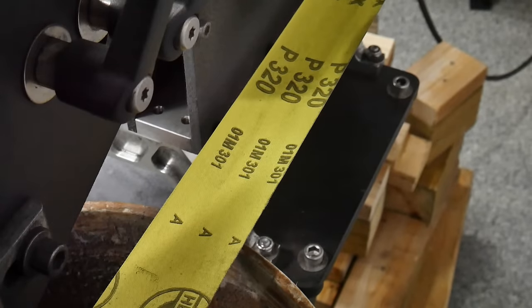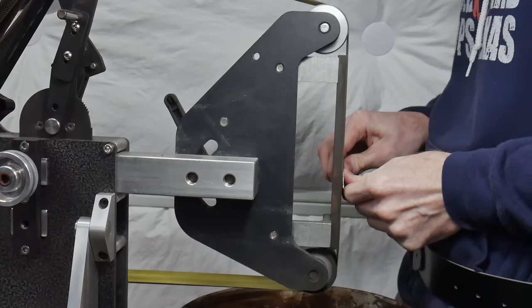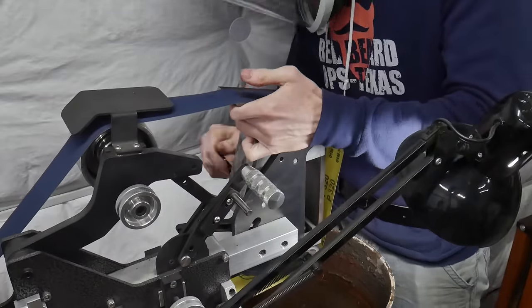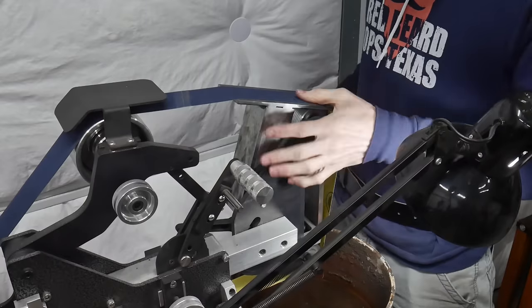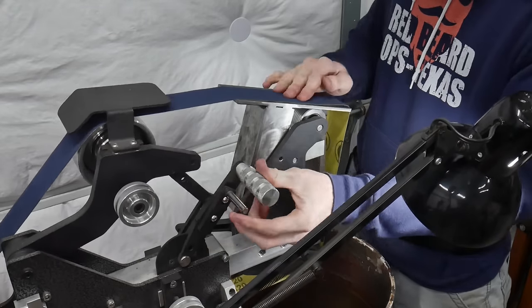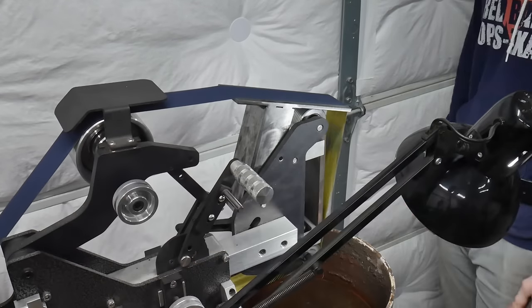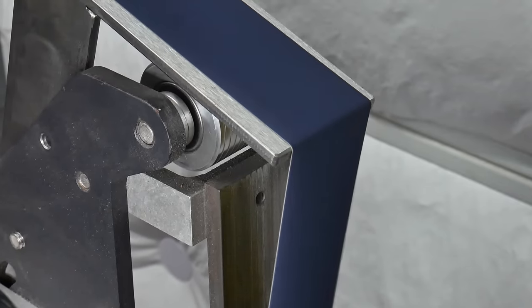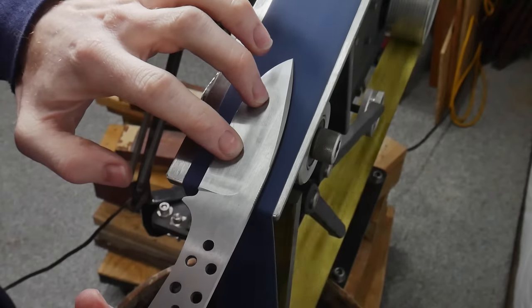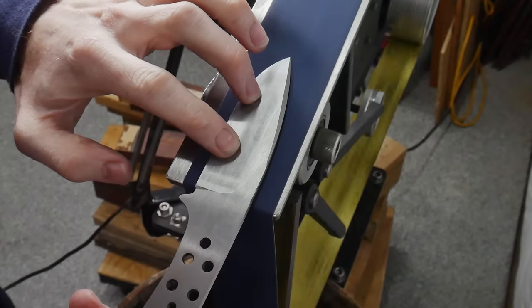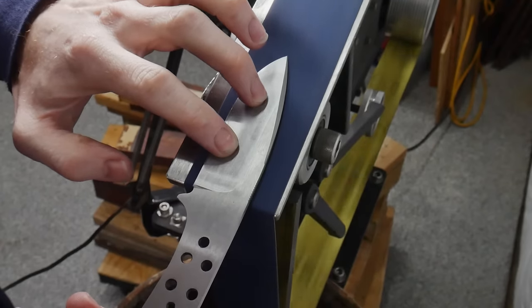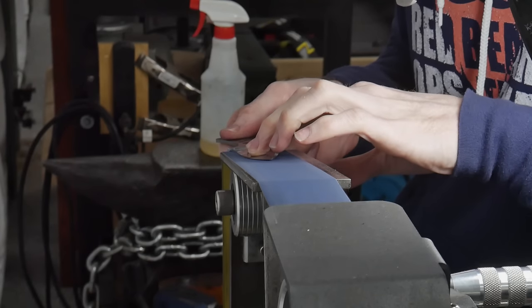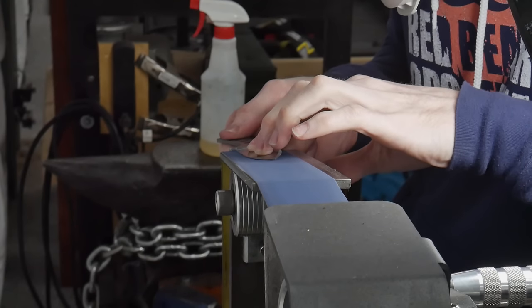Once I had my bevels on this knife ground up to a 320 grit finish, I decided to try out my waterfall platen in an attempt to true up my plunge cuts. I got this platen design from watching the legendary Kyle Royer. With this thin 1/8 of an inch stock it definitely took a little tinkering with to get right, but my plunge lines did turn out even. One nice thing about using a waterfall platen is that it brings your plunge lines up to a high grit finish and the scratches are all moving in the right direction.